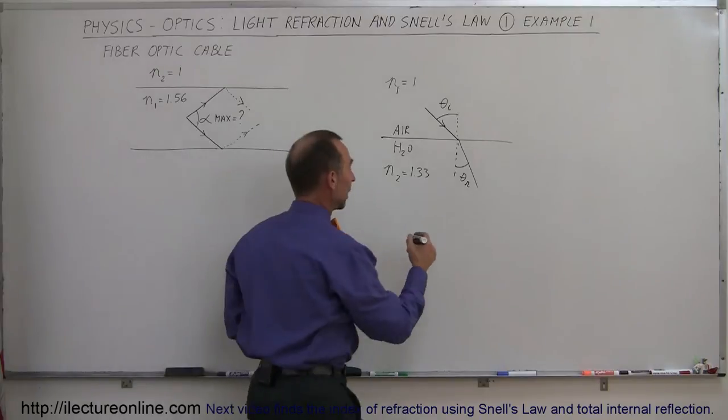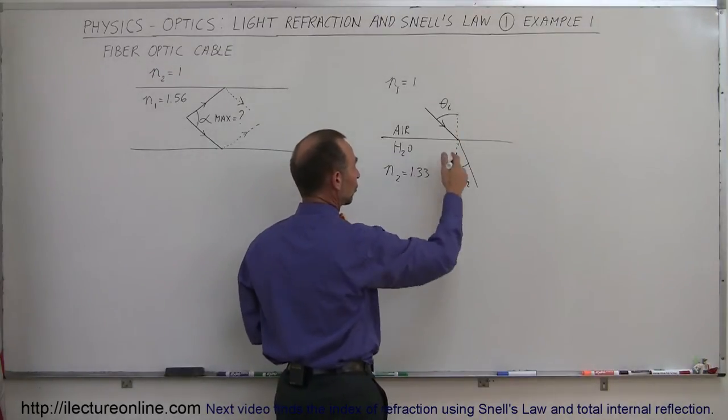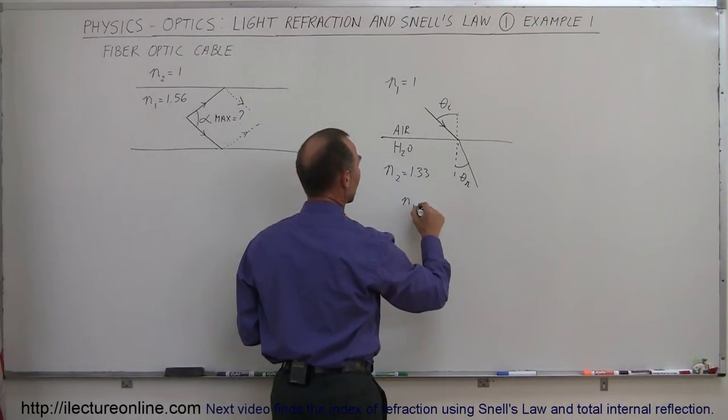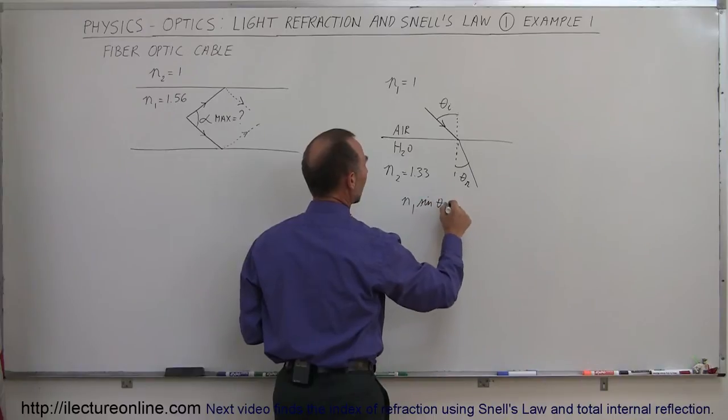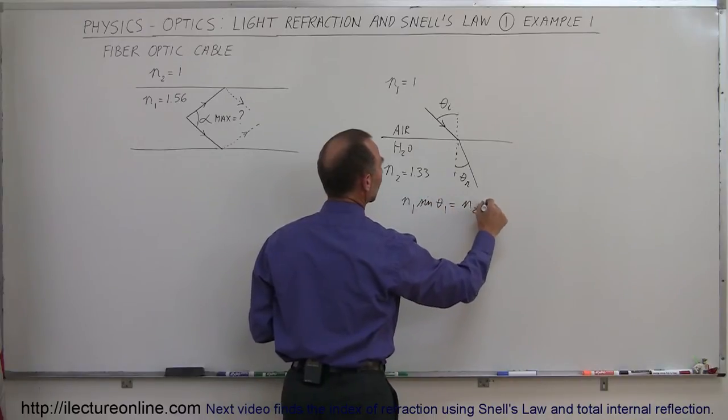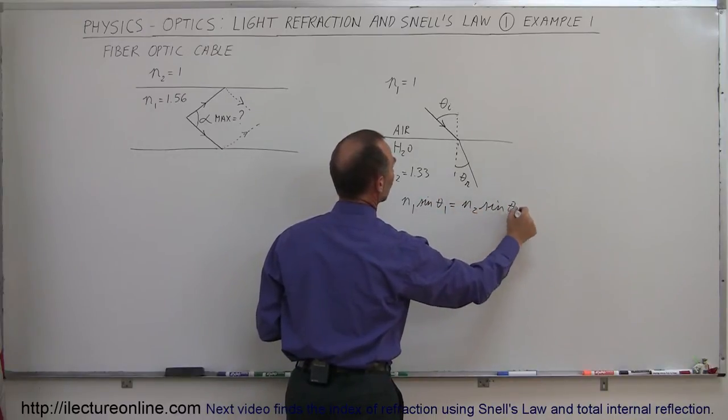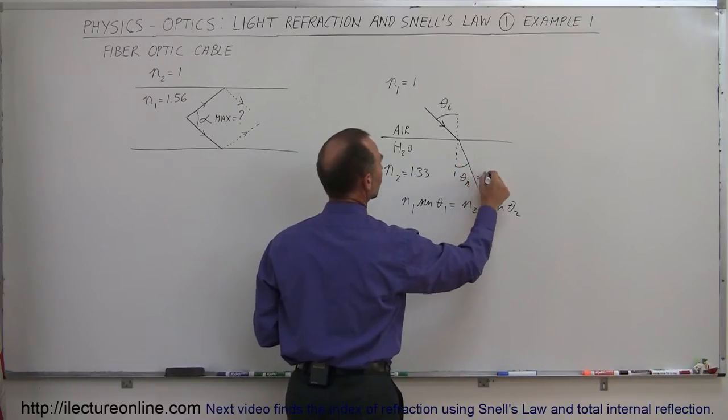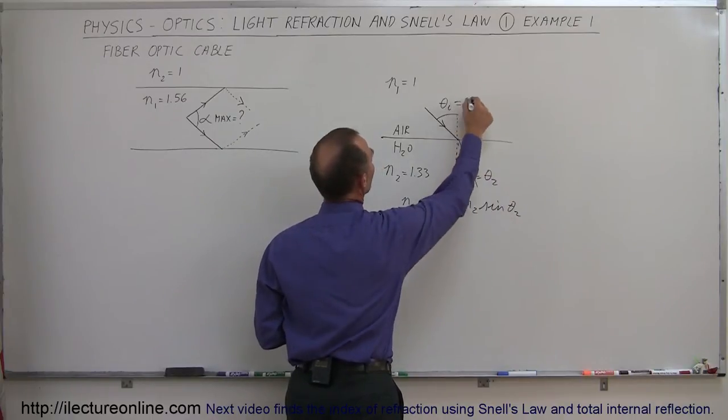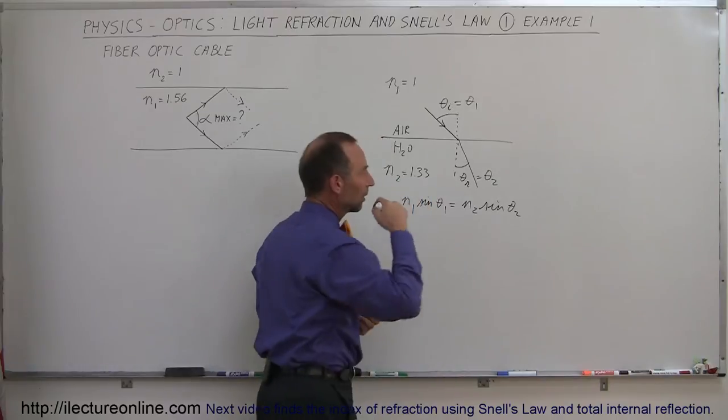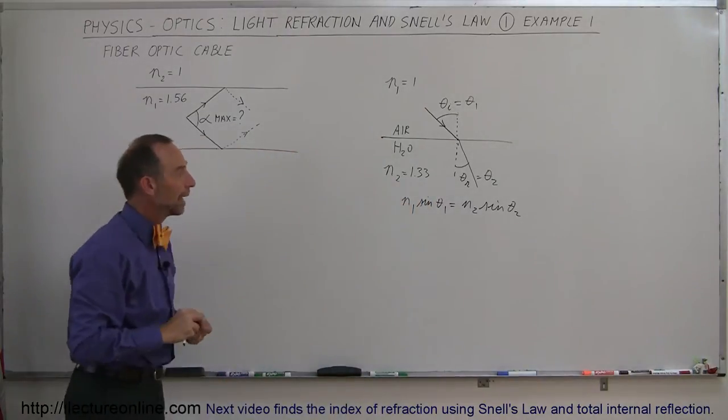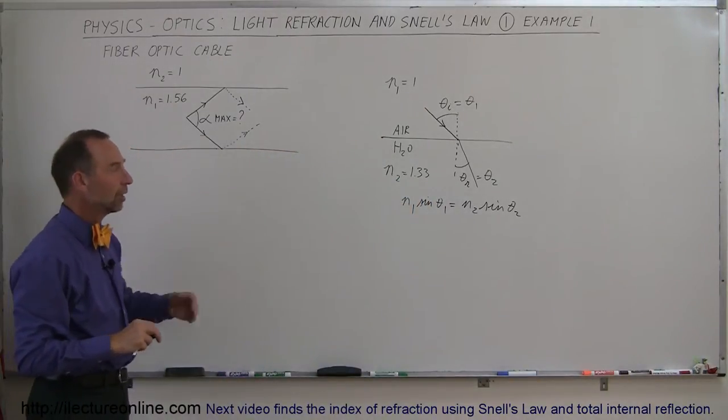It turned out that Snell found an equation that relates those two angles to one another, where he said that N1 times the sine of theta 1 equals N2 times the sine of theta 2. If we call this angle theta 2, and we call this angle theta 1, now we have a nice relationship between the angles and the index of refraction. So this is known as Snell's law.